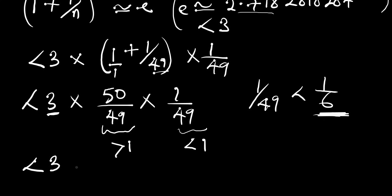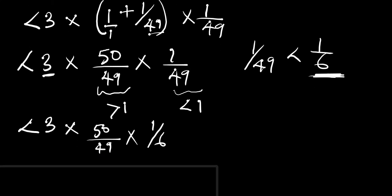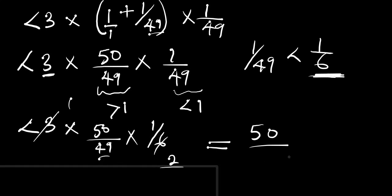Now this gives us a number that is greater than 1, and this part gives us a number that is less than 1 as well. In order to eliminate the 3, it is obvious that 1 divided by 49 is less than 1 divided by 6, so we use 1 over 6 so that the 6 can cancel the 3. We get a number less than 3 times 50 divided by 49 times 1 over 6, which simplifies to 50 divided by 2 times 49, giving us 50 over 98, and this value is less than 1.